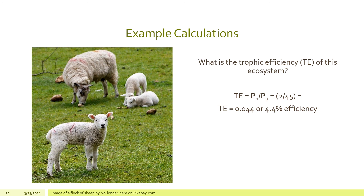Finally, trophic efficiency looks at the overall efficiency of the ecosystem. This is surprisingly simple to calculate since both values were given directly: herbivore production P sub H was 2, and plant production P sub P was 45. Dividing 2 by 45 gives an overall trophic efficiency of 0.044, or about 4.4 percent.